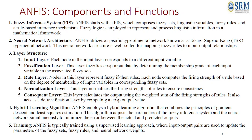The internal architecture comprises five layers: the input layer, the fuzzification layer, the rule layer, the normalization layer, and the consequent layer. Sometimes in many architectures the rule layer is clubbed with the normalization layer. So the layers are: input layer, fuzzification layer, normalization layer, consequent layer, and finally a defuzzification layer applied separately.